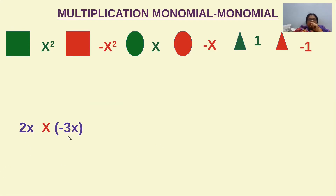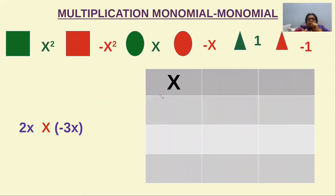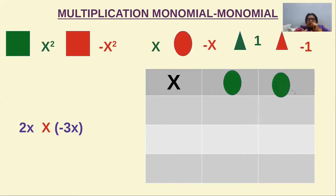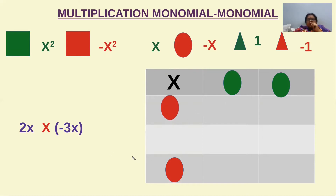We'll multiply a monomial with a monomial. The expression is 2x into minus 3x. We'll take a table for this multiplication. There are two x's, so we take two green colored circular shaped flashcards in the horizontal row. For the vertical column, minus 3x means three negative x flashcards, which we place in the column.